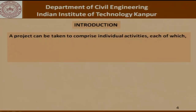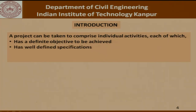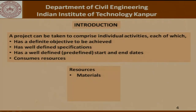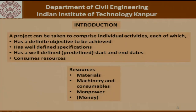Let us try to understand that a project can be taken to comprise individual activities, each of which has a definite objective to be achieved and that is why we carry out that activity. It has well-defined specifications, a predefined start and end date, and it consumes resources. As far as construction projects are concerned, the resources involved could be materials, machinery and consumables, manpower, and all of this can in some form be looked upon as money.